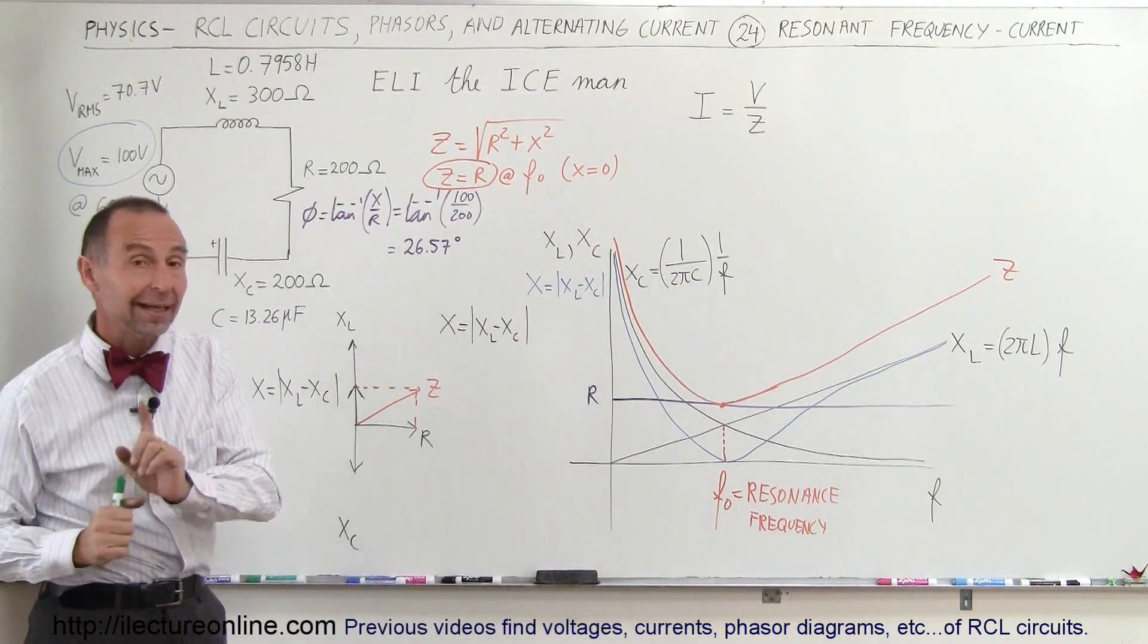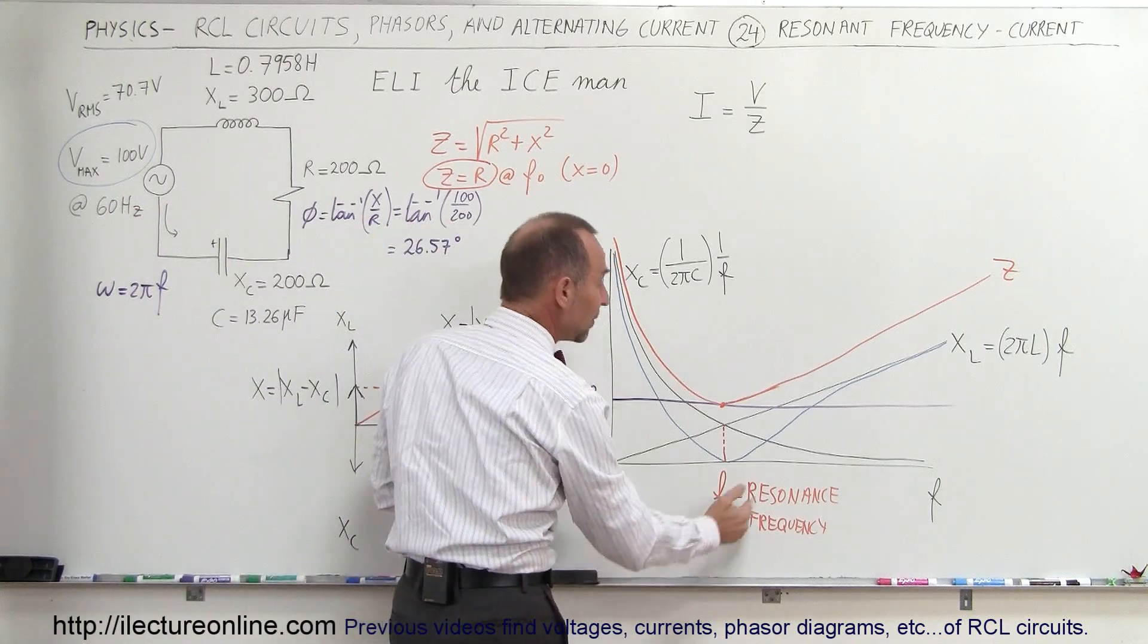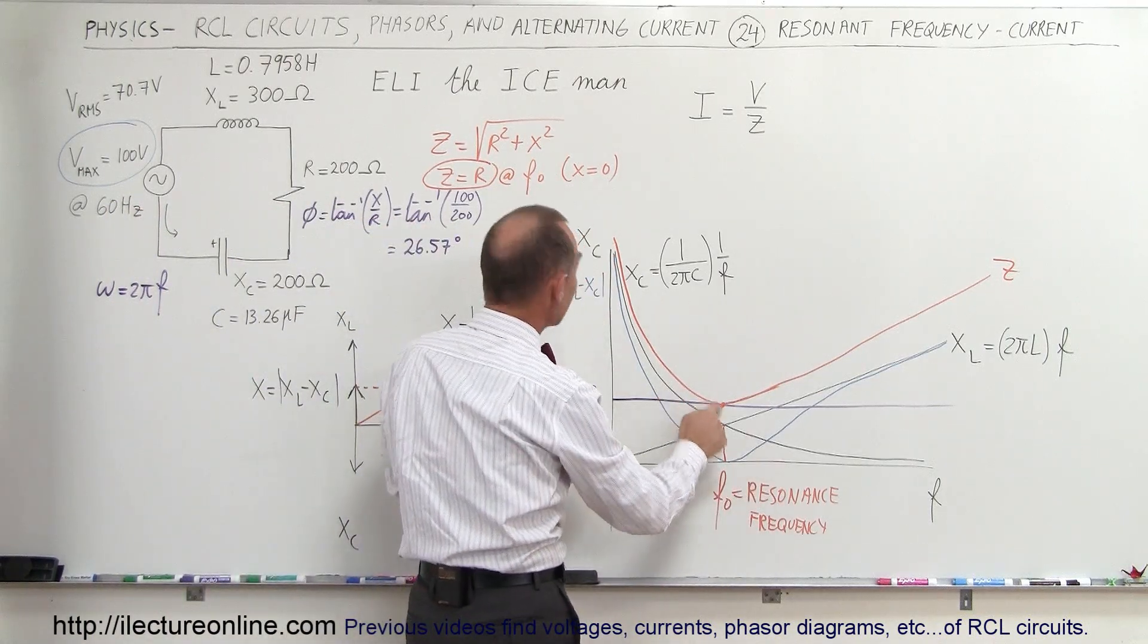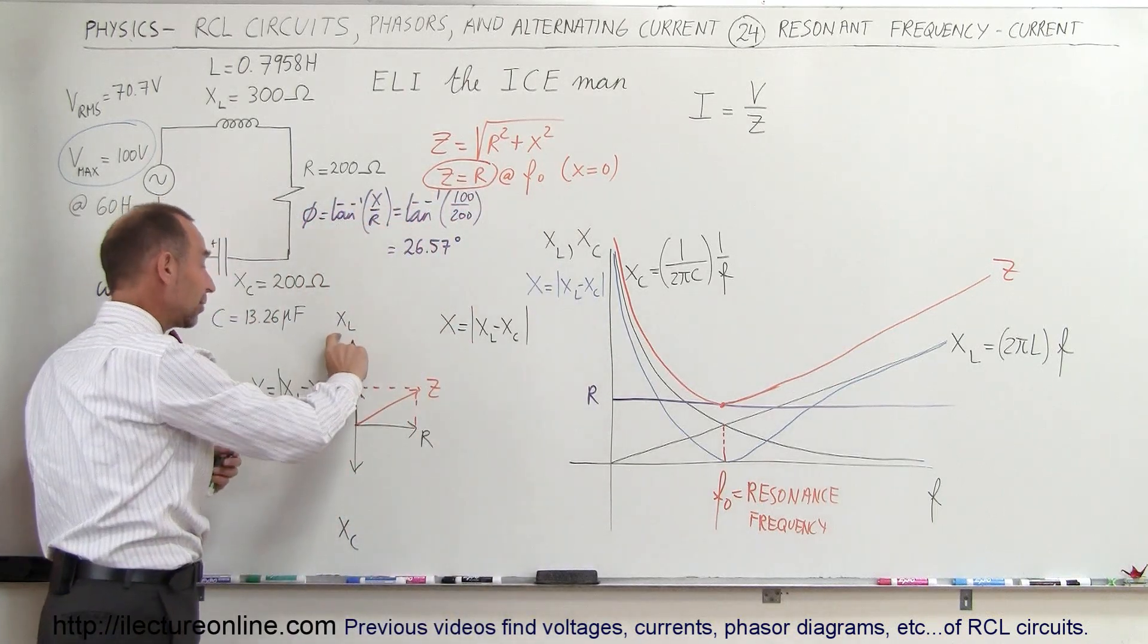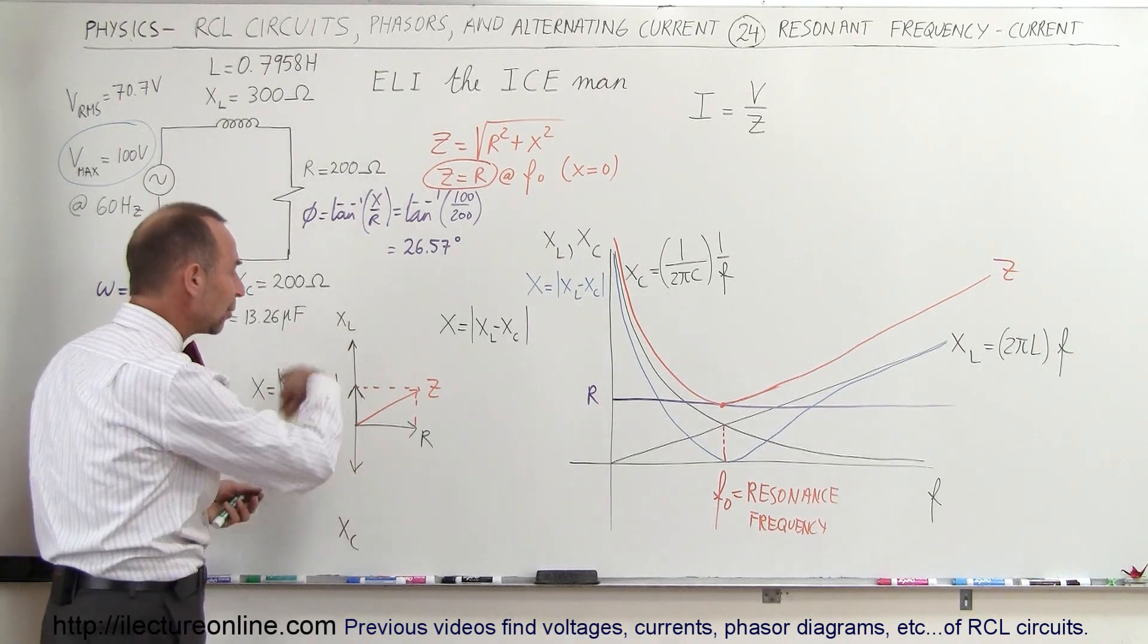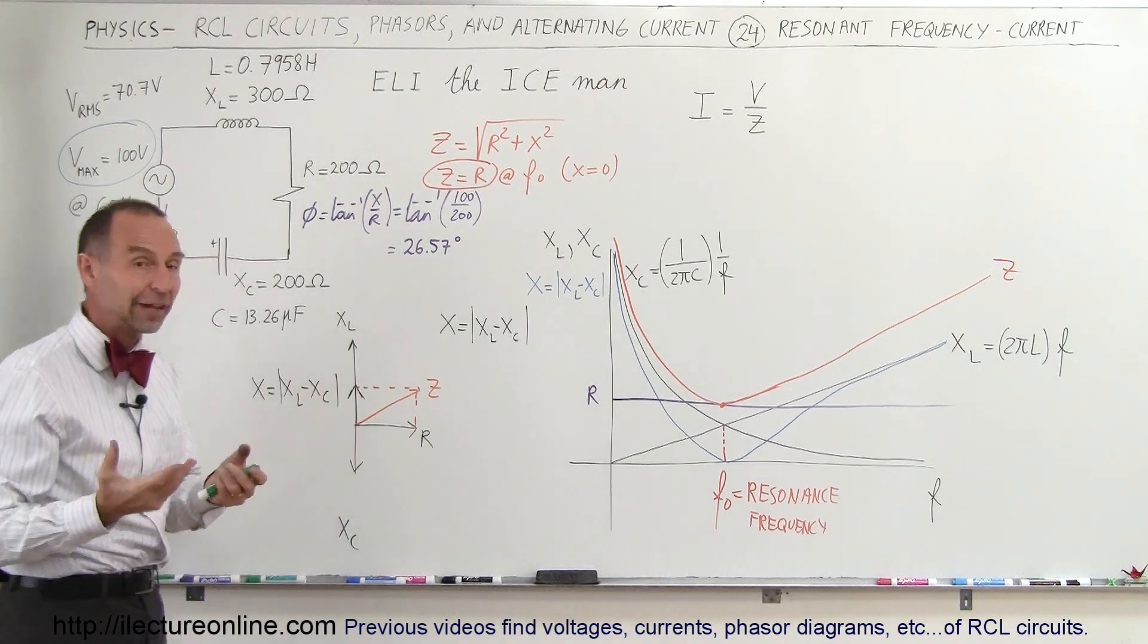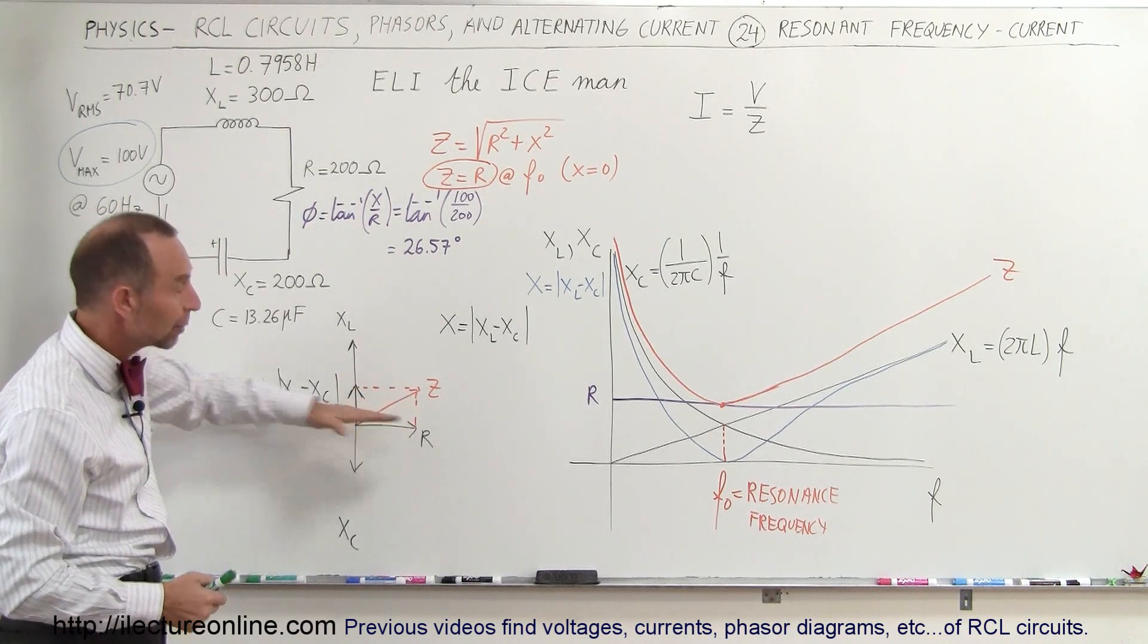And remember in the previous video we saw that the impedance becomes the minimum at the resonance frequency because at the resonance frequency the impedance is equal to the resistance, since at that point the inductor reactance will be equal to the capacitor reactance and they will cancel each other out because we add the resistance and the reactances as vectors. It's a vector addition, they cancel each other out, and the impedance then will become equal to the resistance.